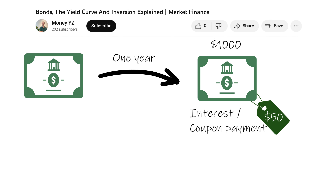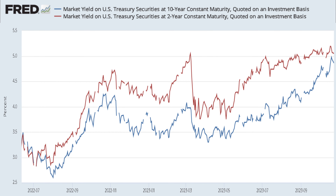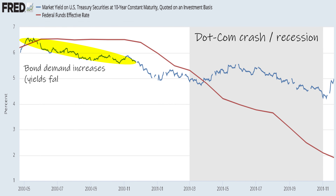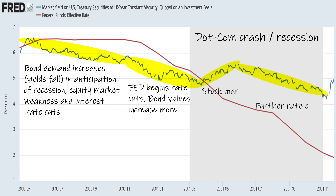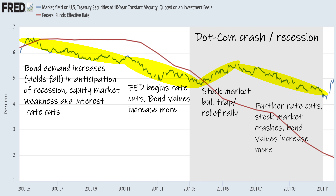Following on from our previous video setting the groundwork for how bond yields and the yield curve work: why would a relatively more risky longer-term bond have a lesser yield than a short-term bond? Well, the answer is multifaceted, but in general, as concerns of impending recession increase, investors tend to buy longer-dated treasury bonds based on the premise that they offer a safe harbour from falling equity markets, providing preservation of capital and the potential for appreciation in value as the Fed loosens monetary policy, interest rates decline, and these relatively high coupon-paying bonds increase in value.